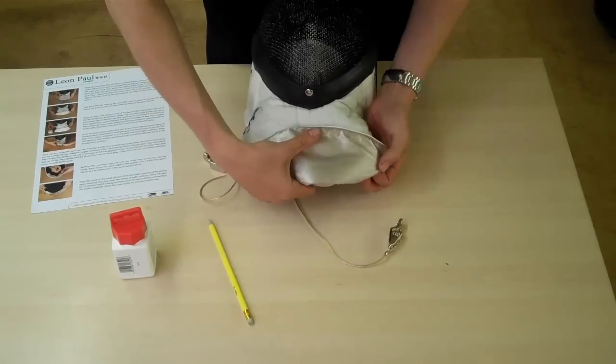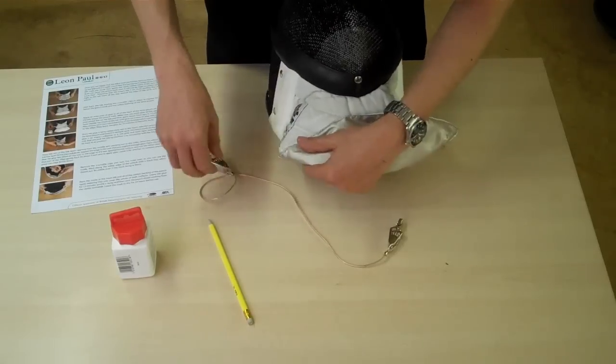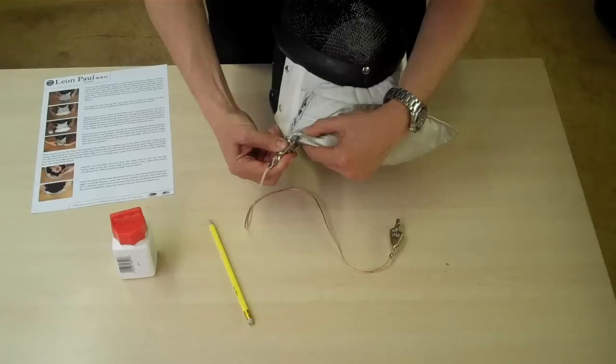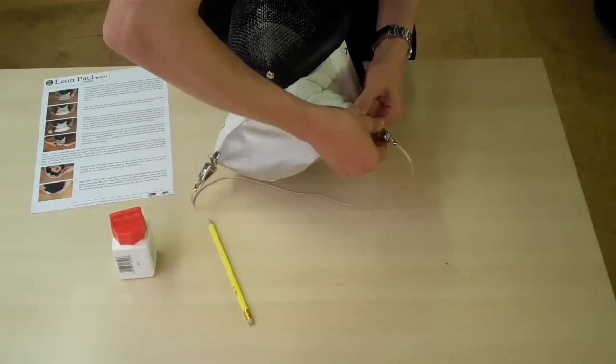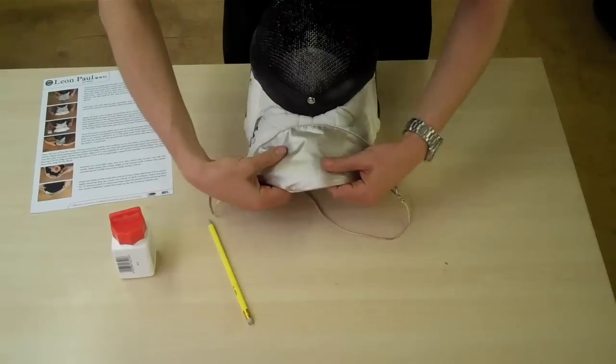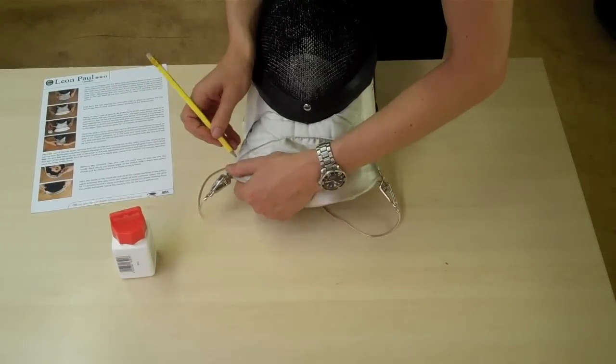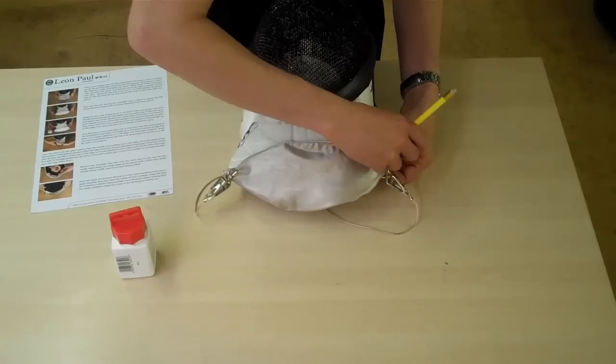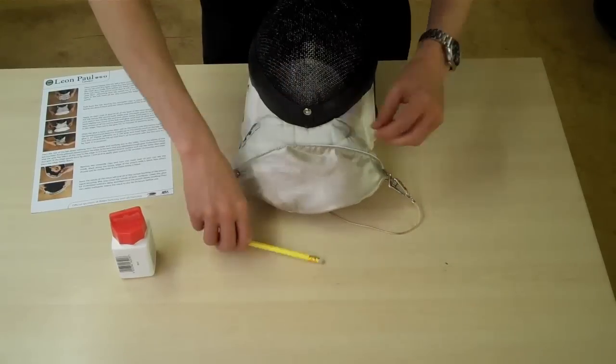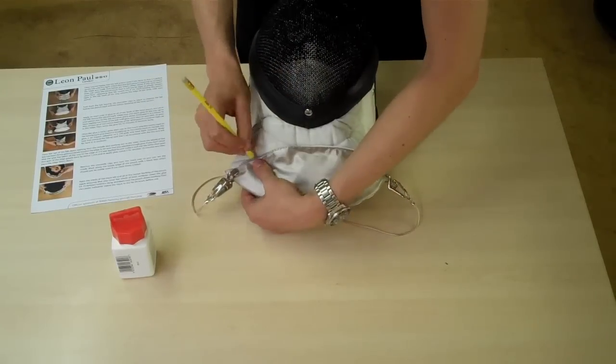Once it's in line, you clip the lame patch in place using these clips, and then you'll draw around the bib, which will show you where you're going to glue.